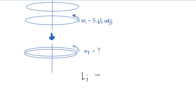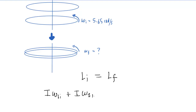The initial angular momentum of our system is equal to the final angular momentum of our system. We'll take the initial angular momentum and break it up into two objects: the moment of inertia of the first disk times the initial angular speed of the first disk, plus the moment of inertia of the second disk times the initial angular speed of that second disk.